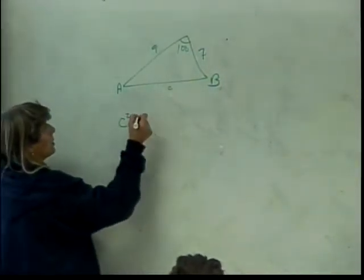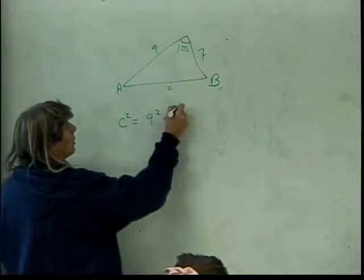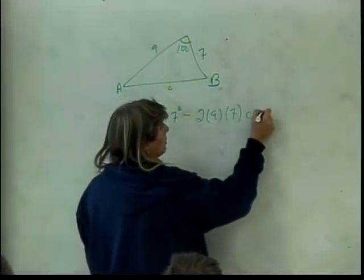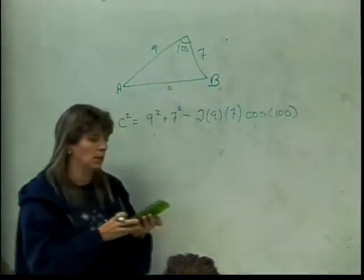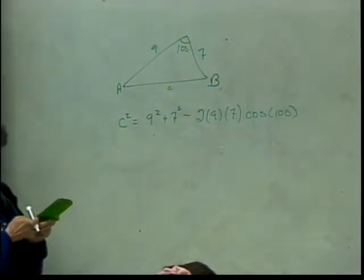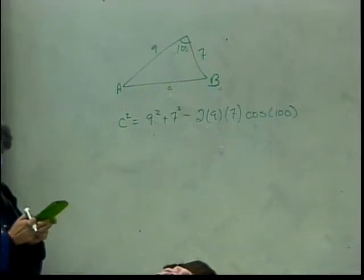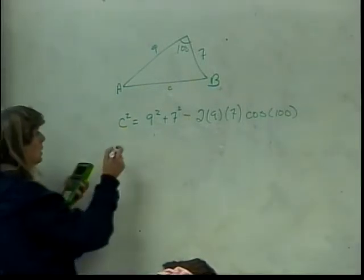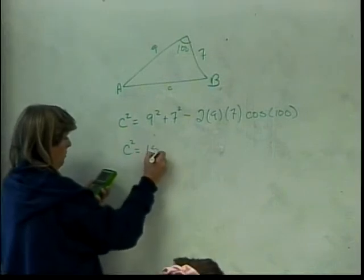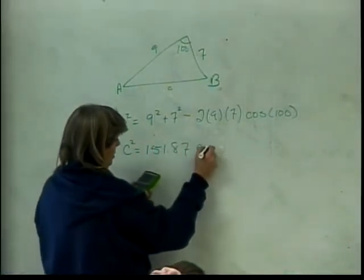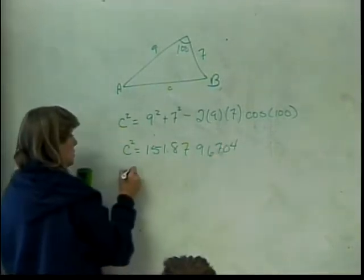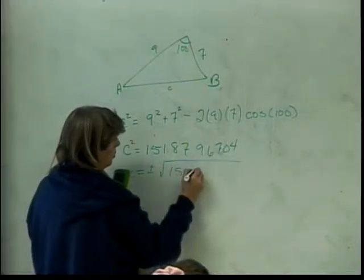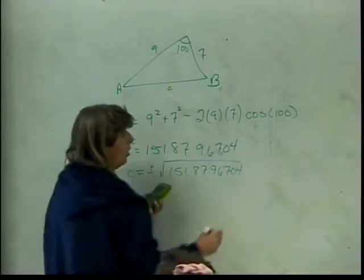So c squared is going to be 9 squared plus 7 squared minus 2 times 9 times 7 times the cosine of 100 degrees. So let's see what that is. This gives me that c squared is equal to 151.8796704.